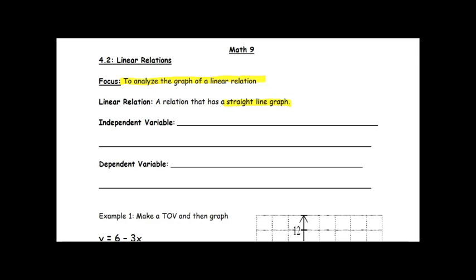First of all, just a couple of definitions. The independent variable — you'll often hear me refer to this as our input. It is our input, it is also our x coordinate of the points that we will graph, and it is also the value that determines the other value. So the independent variable determines what the other value will be.